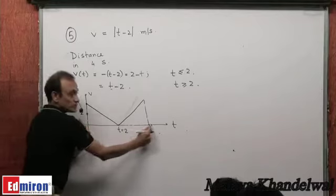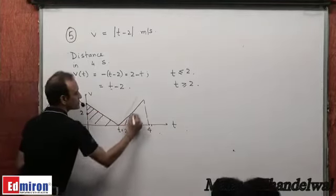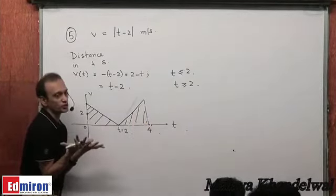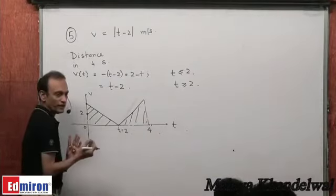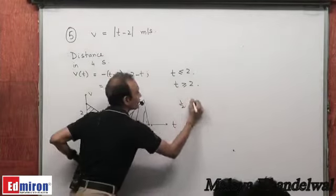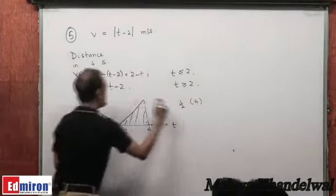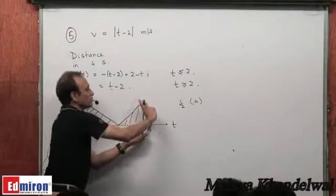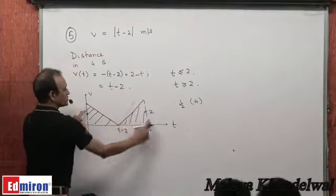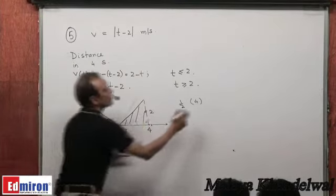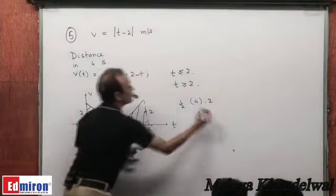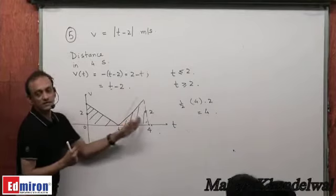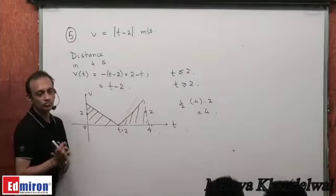In the interval 0 to 4 the total displacement is the sum of the two triangular areas, which is also the total distance since direction hasn't changed. The total area is 2 × (½ × 2 × 2) = 4 square units. So displacement = distance = 4 units.